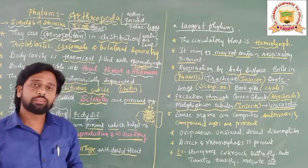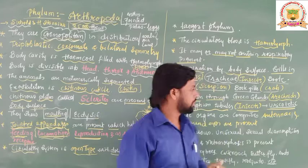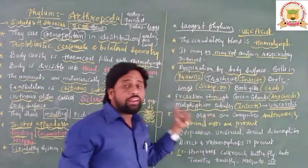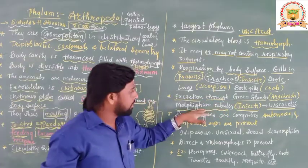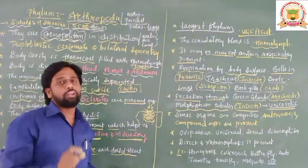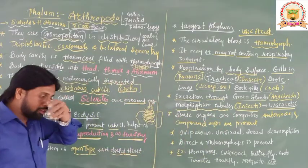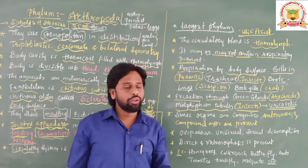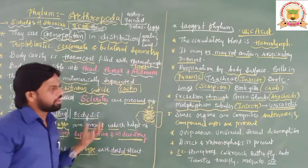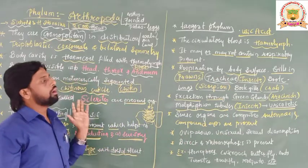Arthropoda animals are uricotelic — they remove nitrogenous waste in the form of uric acid. Animals that release nitrogenous waste as urea are called ureotelic, and those that release it as ammonia are called ammonotelic. However, most arthropods are uricotelic, releasing their nitrogenous waste in the form of uric acid.